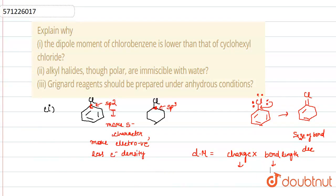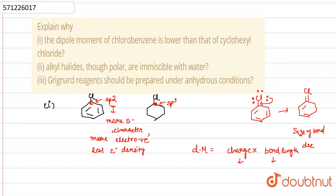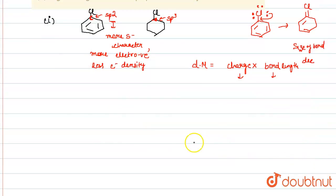The next part is, alkyl halides though polar are immiscible in water. So, alkyl halides are polar. We know that we can take any alkyl halide like CH3-I. This is polar because there is a charge distribution here. And water is also polar because here also charge distribution is there.